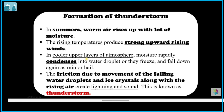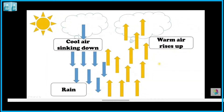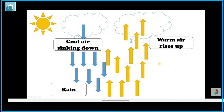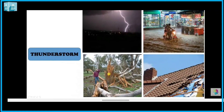So these two things are taking place together — almost all people have seen this. You can see here: warm air is rising up, and cool air is sinking down in the form of rain. There is friction between them, and as a result lightning occurs.